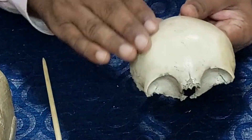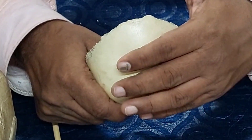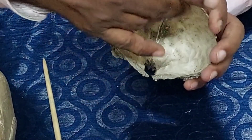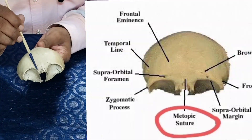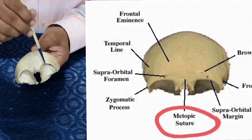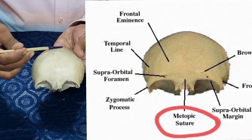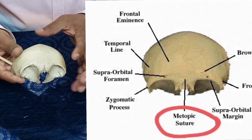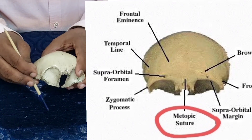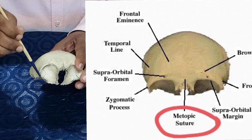Let's discuss the squamous part first. It has two surfaces: the anterior surface or convex surface, and the posterior surface or concave surface, also called the cerebral surface. The supraorbital margin on both sides is the junction between the orbital plate and the squamous part. The supraorbital margin is concave on both sides and has two parts — the medial one-third is rounded, and the lateral two-thirds is sharp.